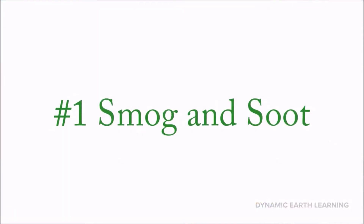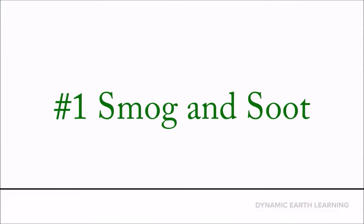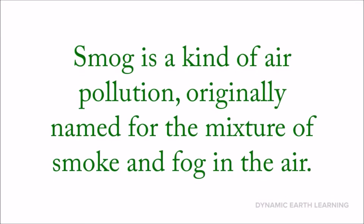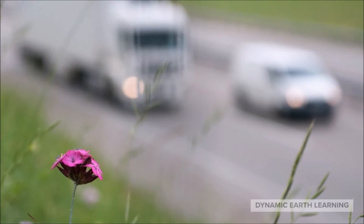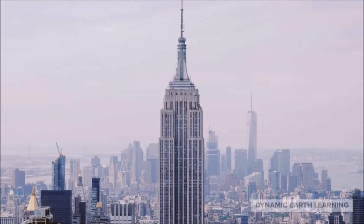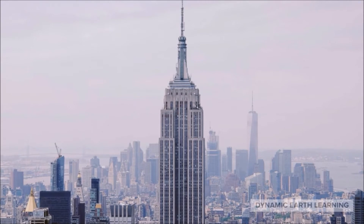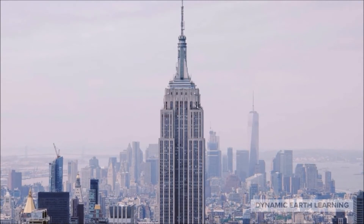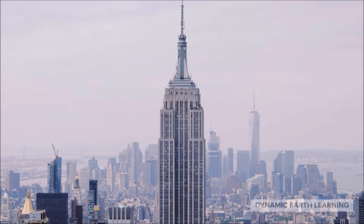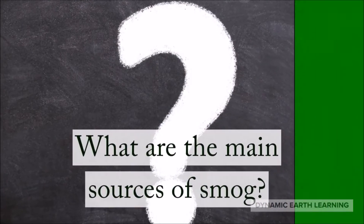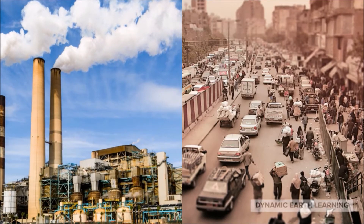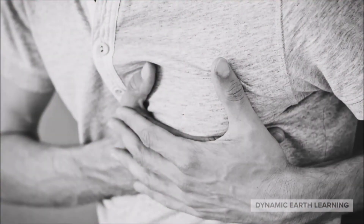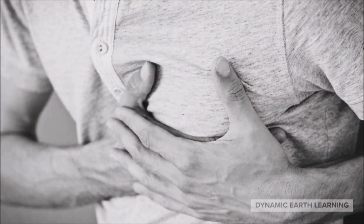The first is smog and soot. Smog is a kind of air pollution, originally named for the mixture of smoke and fog in the air. It forms when the weather is warmer and there's more ultraviolet radiation. Smog is a problem in cities with a lot of industry and traffic, and it continues to harm human health. The main sources of smog are cars, trucks, factories, and power plants. Smog is especially dangerous because it can penetrate the lungs and bloodstream and worsen bronchitis or lead to heart attacks.